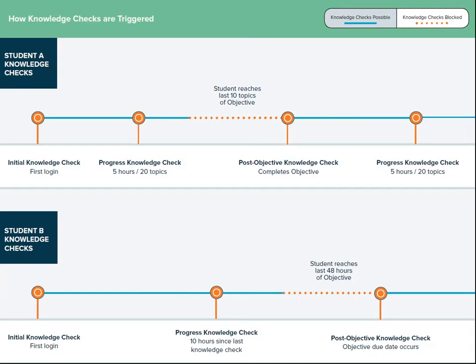Another common trigger is the post-objective knowledge check. Per the instructor's setting, students will get a knowledge check once they complete each objective in the course, or the due date occurs, whichever happens first.